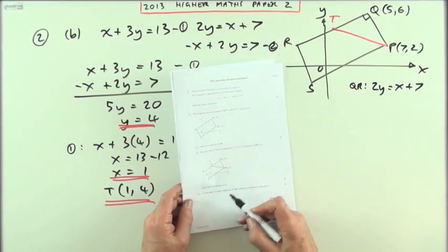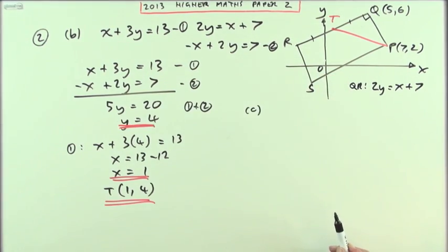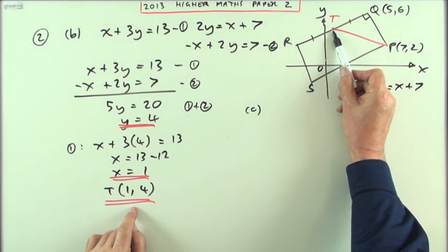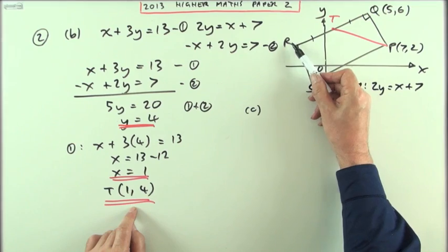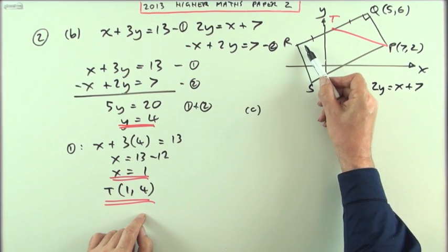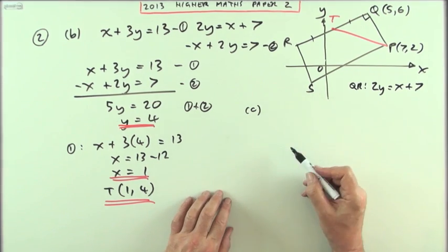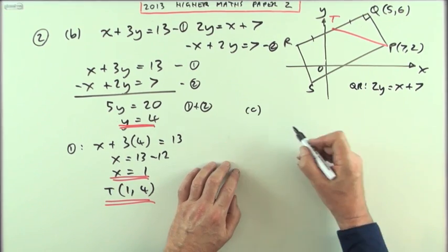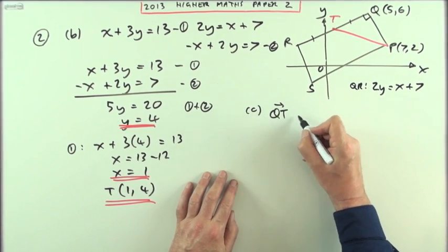Now part c says: given that T is the midpoint of QR, find the coordinates of R and S. Well, you could use your midpoint formula in reverse. If T is the midpoint of those, you could call that x, y and go through that - a half of x plus 5 should give 1, and a half of y plus 6 should give 4. You could do that, or you could use displacements. I think I'll use displacements because vectors seem to be missing from this paper somehow, so I'll just use vectors there.